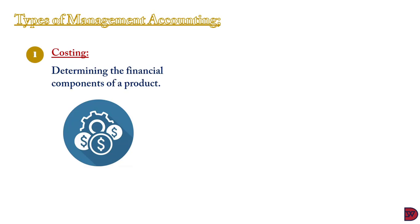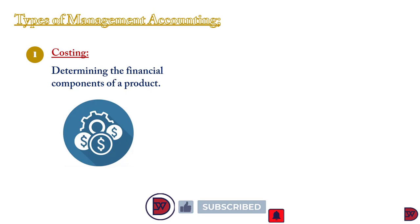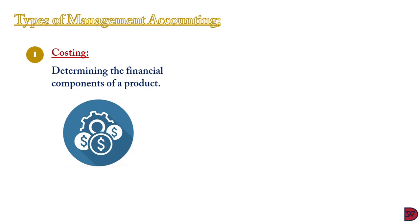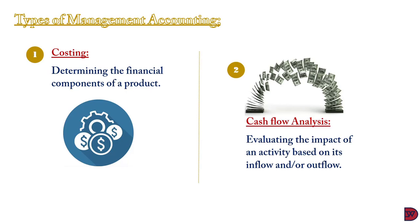Looking at the types of managerial accounting, the first is costing. Costing deals with determining the total cost involved in the production of a good or service — normally done by estimating expenses for material, labor, and overheads needed to transform raw materials or semi-finished goods into finished ones.